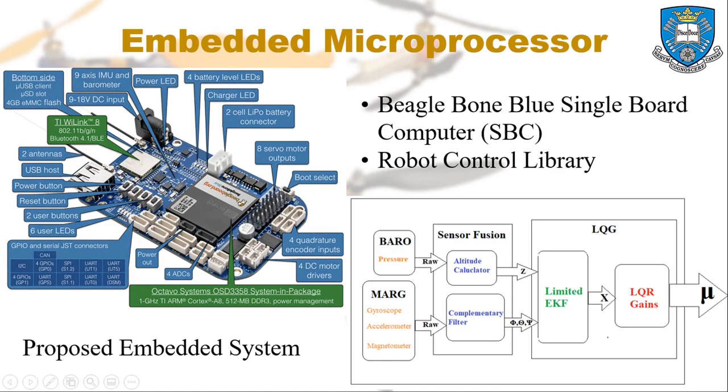The proposed embedded system consists of three broad stages: the sensor stage, which reads in the raw barometer and MARG values, the sensor fusion stage, which combines these values to produce the observed outputs, and the LQG stage, which consists of the state estimator and LQR gains derived.